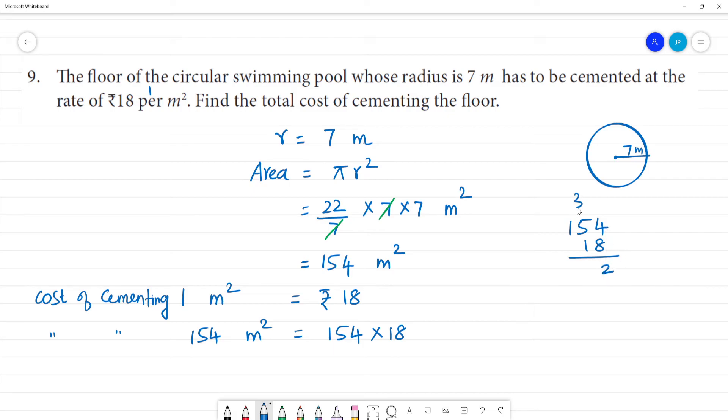This is 154 multiplied by 18. 8 fours are 32, remainder 3. 8 fives are 40, 40 plus 3 is 43, remainder 4. 1 times 8 is 8, 12. Bring 0 for total. In the next column, 4, 5, 1. So 2772. What is the cost? The cost is ₹2772.